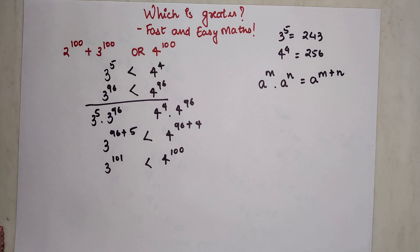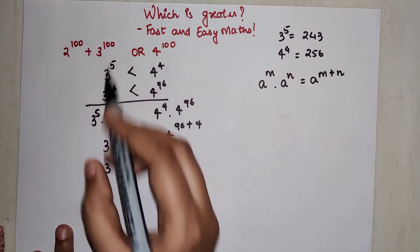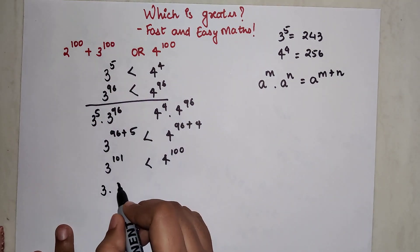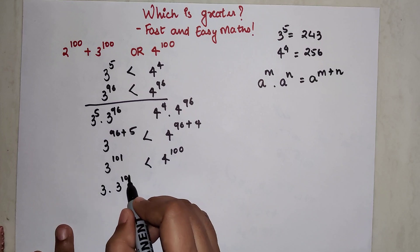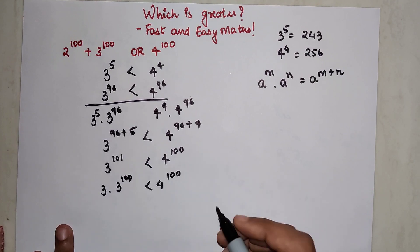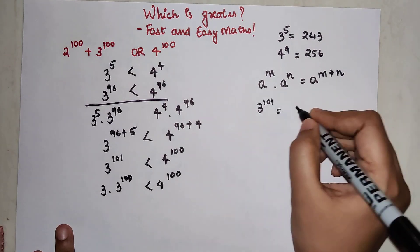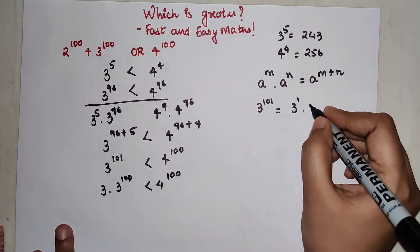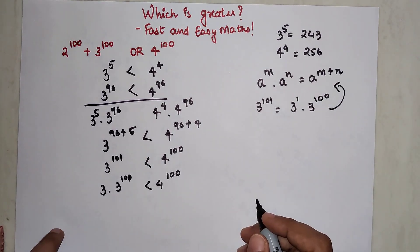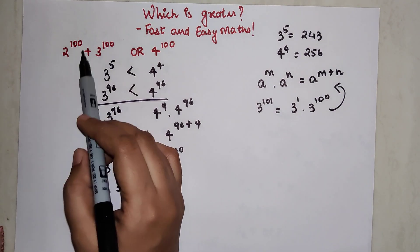Since my question was 3^100, I will write this as nothing but 3 × 3^100 which is smaller than 4^100. Because 3^101 can also be written as 3^1 × 3^100, this is vice versa.